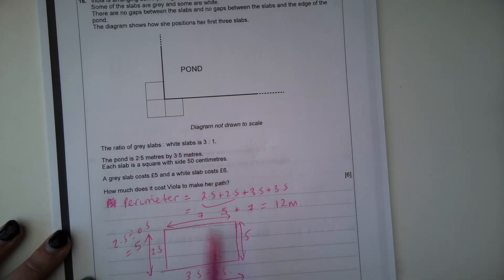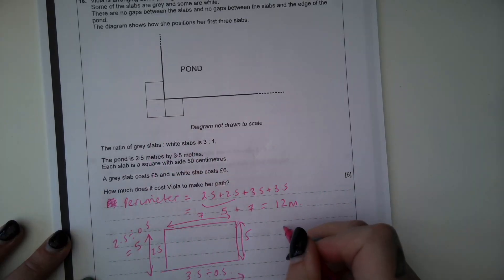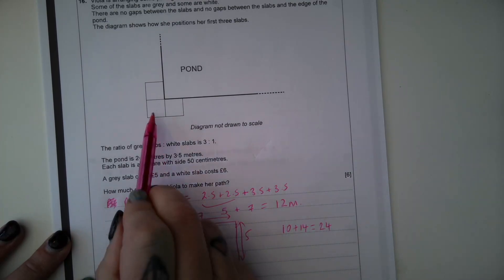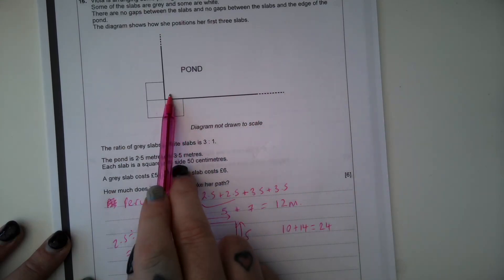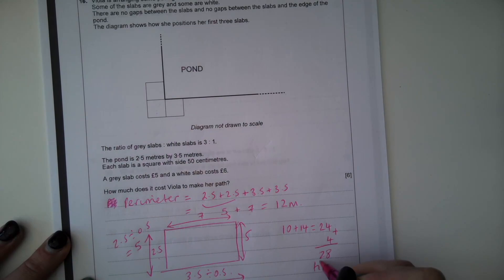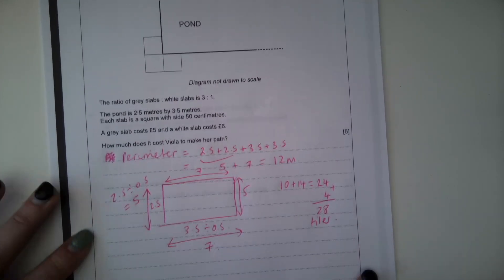So we're going to have 5 plus 5 plus 7 plus 7, so that's 10 plus 14. So we're going to have 24 tiles, but we're also going to have 1 for each corner in that corner spot as well. So we're going to add 4, so we've got 28 tiles in total.